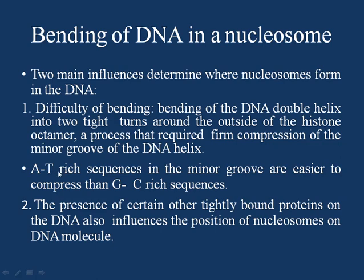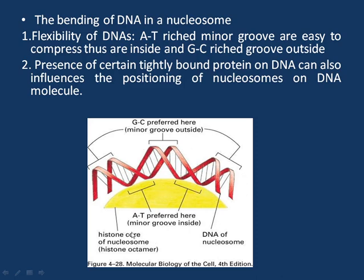In the DNA helix, the major and minor grooves have both AT and GC sequences, but AT-rich sequences in the minor groove are easier to compress compared to GC-rich sequences. So when DNA wraps around the histone octamer, the AT-rich regions in the minor groove are oriented towards the inner side — towards the outer periphery of the histone core — and GC-rich sequences are towards the outside. This arrangement increases the flexibility of the DNA and helps it turn and wrap around the histone octamer.